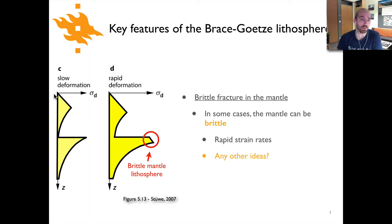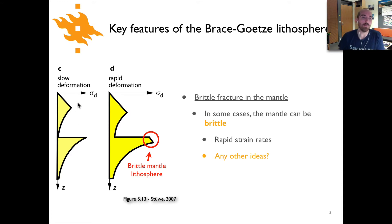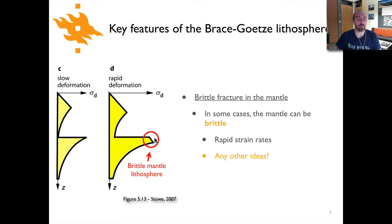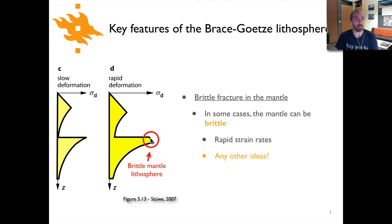In that previous video lecture we saw two examples of the strength of the lithosphere for slow and rapid deformation, or low and high strain rates. We saw that more rapid deformation increases the viscous strength, so the transition from brittle to viscous deformation occurs deeper. In the case of the mantle lithosphere, the increased viscous strength results in a region where the frictional strength of the mantle lithosphere is actually lower than its viscous strength, giving a small portion expected to behave in a brittle manner, possibly having earthquakes in the uppermost mantle lithosphere.